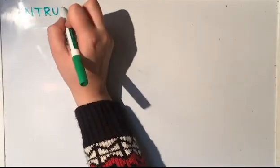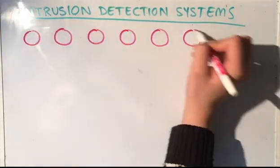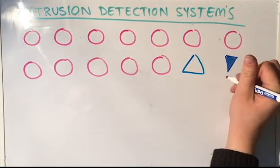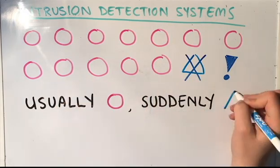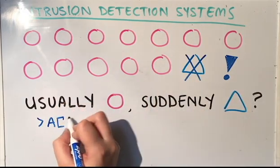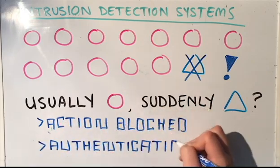Intrusion detection systems analyze a computer's habits and blocks any activity that appears to be abnormal. For example, if you usually access your network from home and suddenly a user is attempting to access it from Timbuktu, the intrusion detection system will block this action until it receives the appropriate verification.